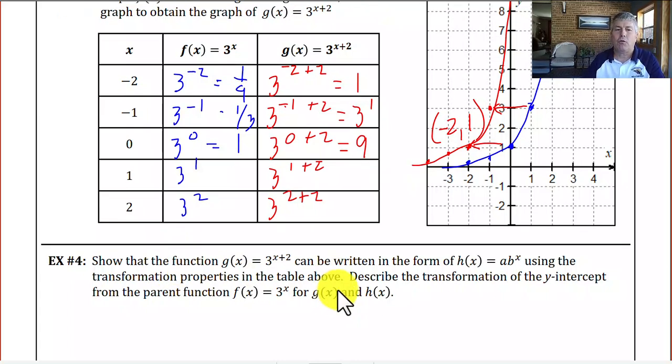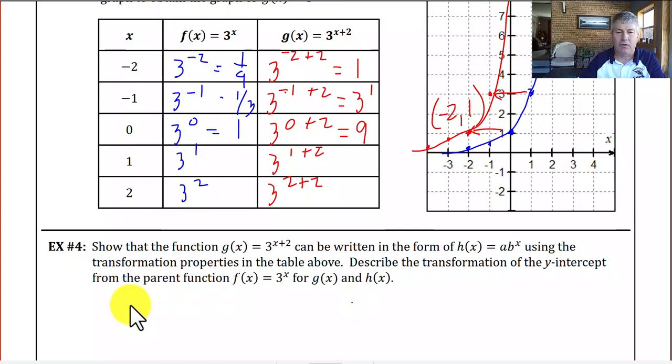So example 4 says, show that the function g(x) equals 3 to the (x plus 2) can be written in the form h(x) equals a times b to the x using the transformation properties in the table above. Describe the transformation of the y-intercept from the parent function for g(x) and h(x). So g(x) is equal to 3 to the (x plus 2). Using our properties of exponents, a power times a power, we add the exponents. This is actually the equivalent of 3 to the x times 3 to the second.